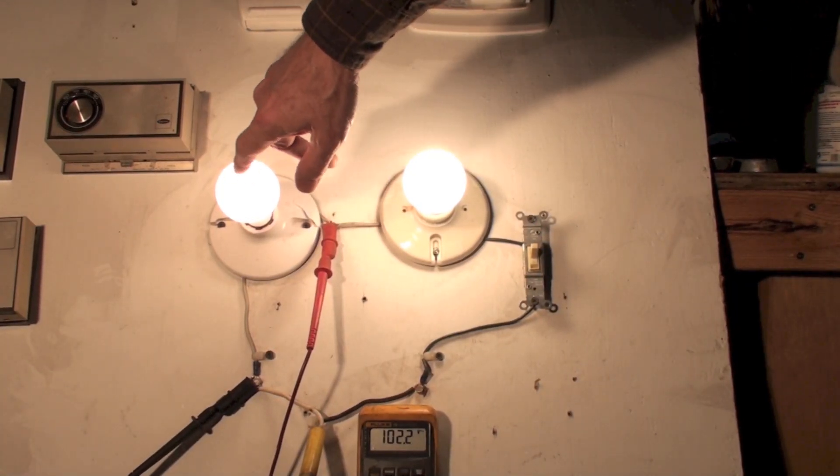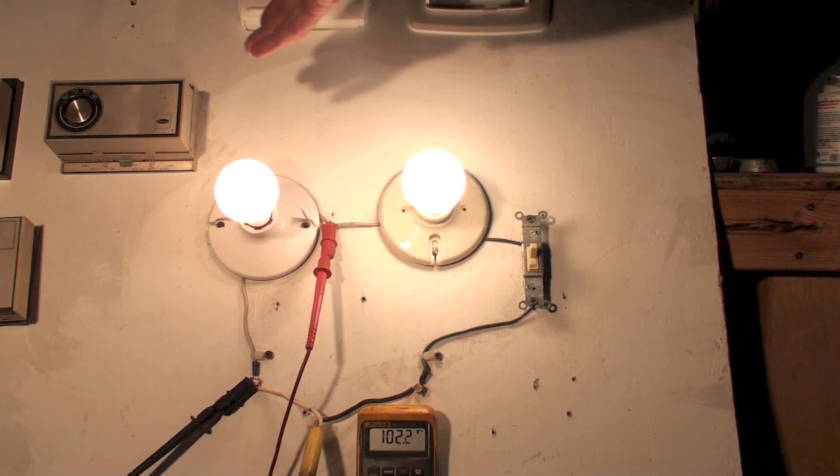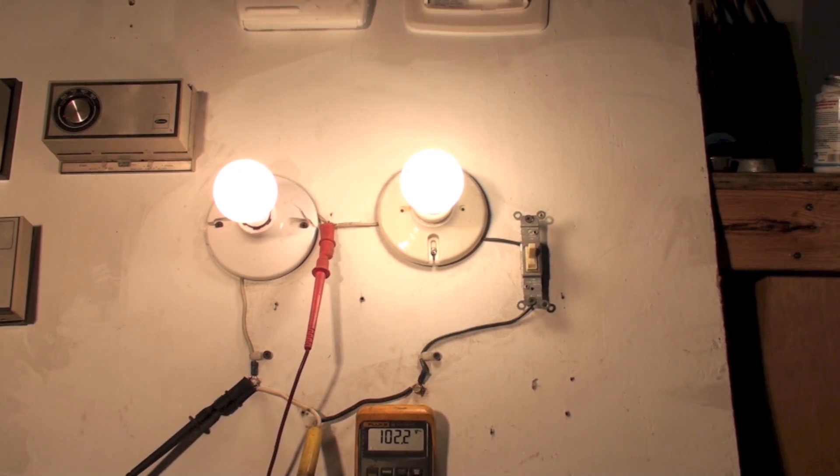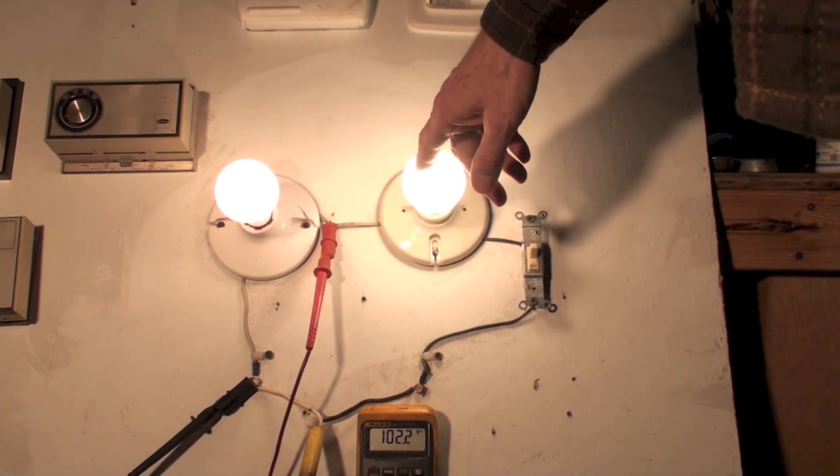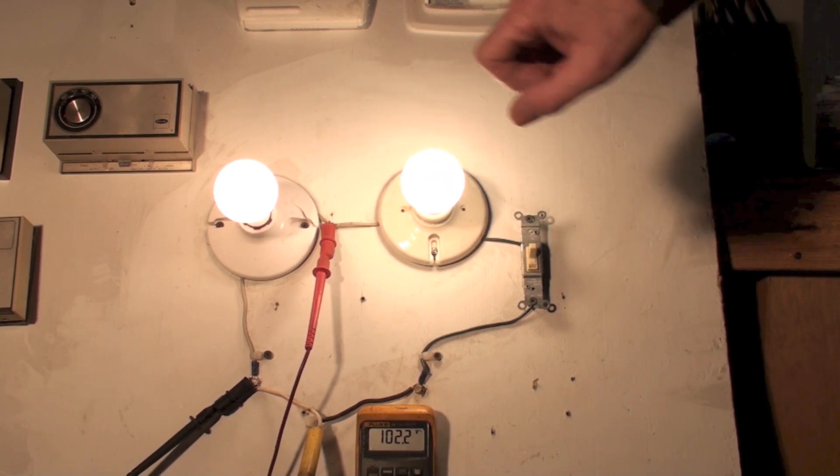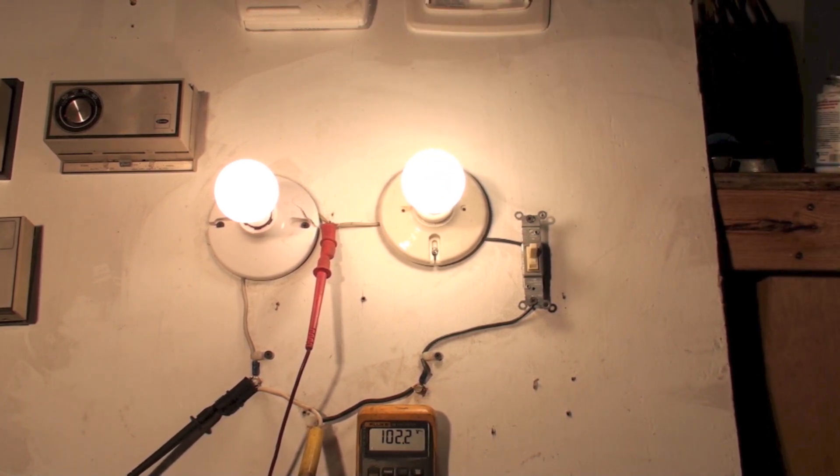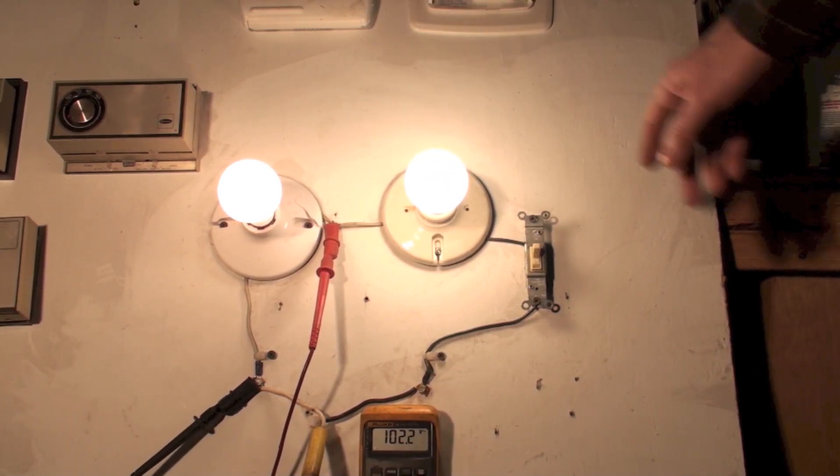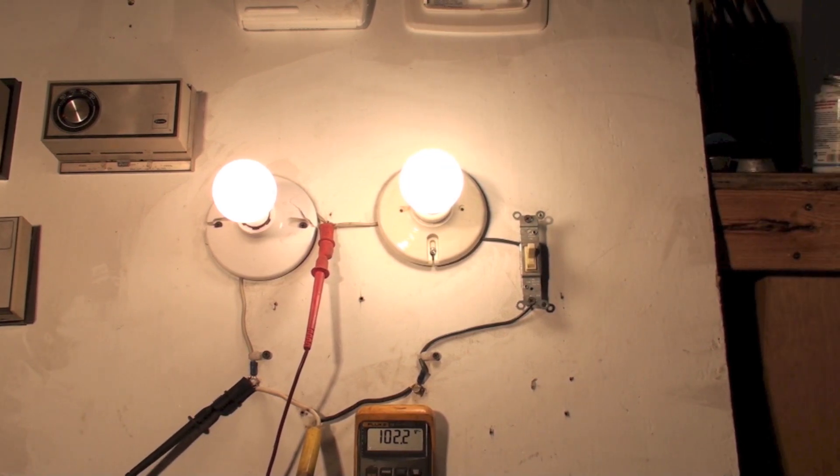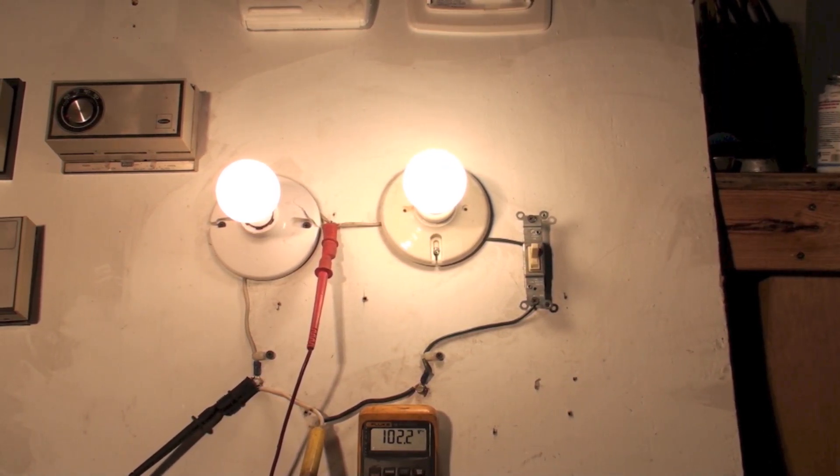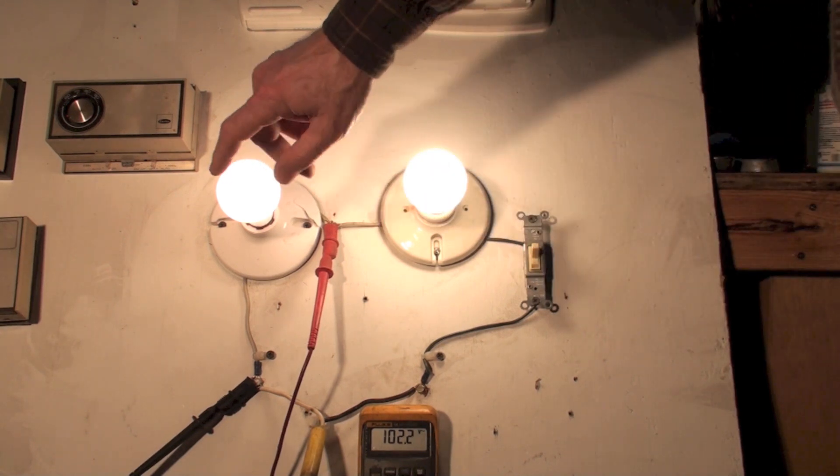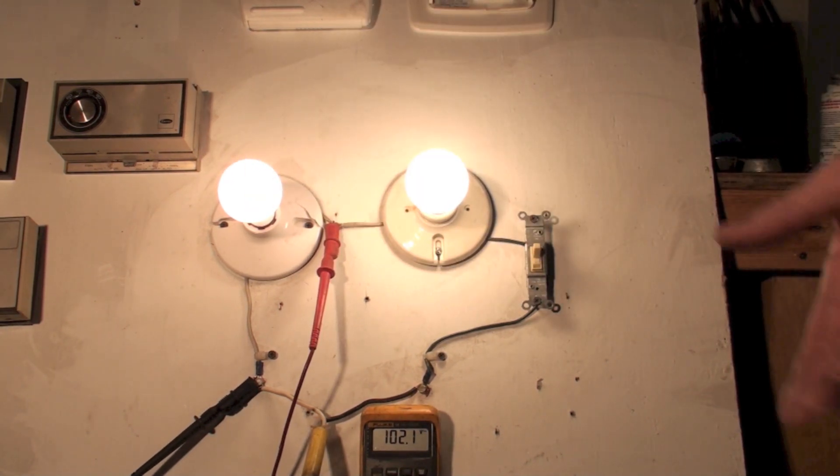This bulb is only getting 102, which is 20 volts less than it should. This one is getting 20 volts more than it should because they're different size loads. This one is probably going to burn up because it's got excessive voltage to the bulb. This one is just not going to perform very well because it's getting too low voltage.